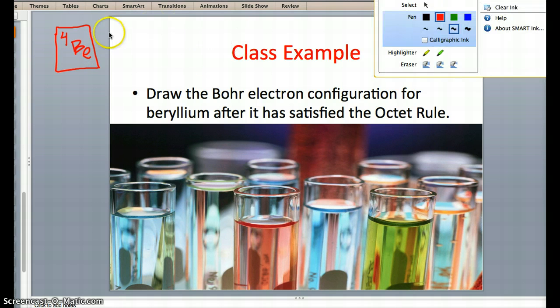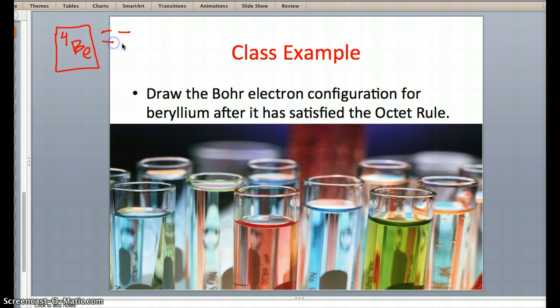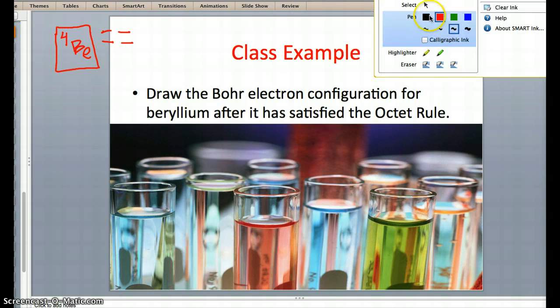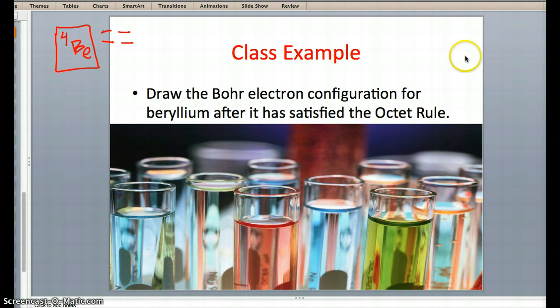Given that we know we have 4 electrons, let's draw those 4 right here. It will help us complete our Bohr diagram drawing.